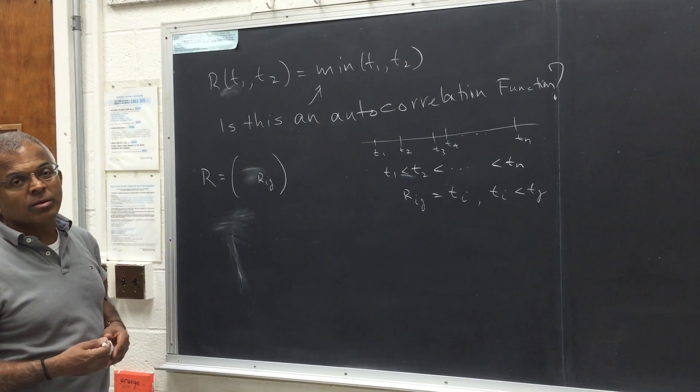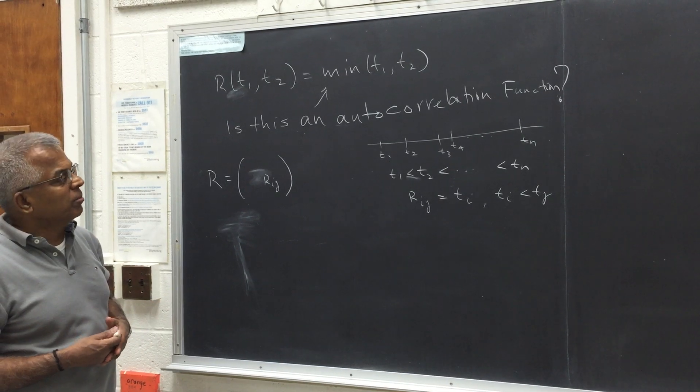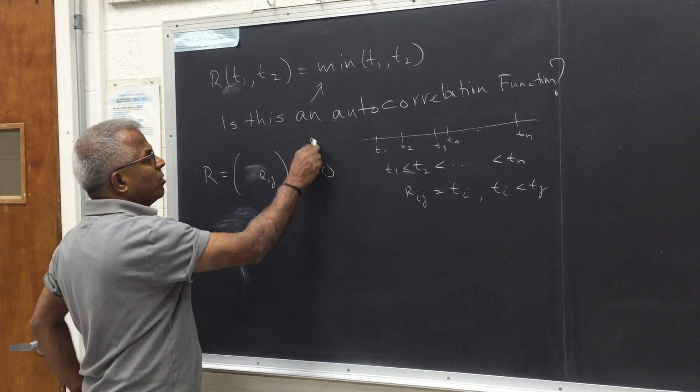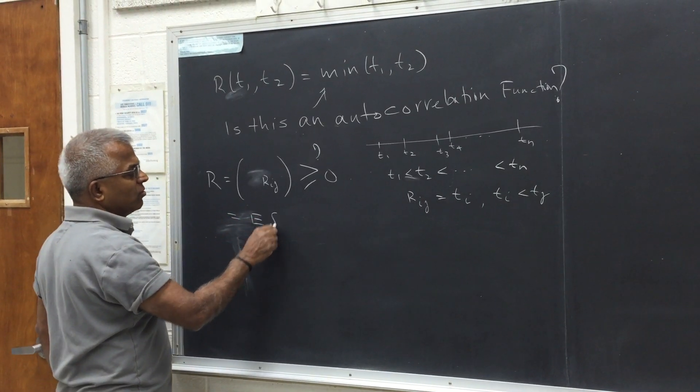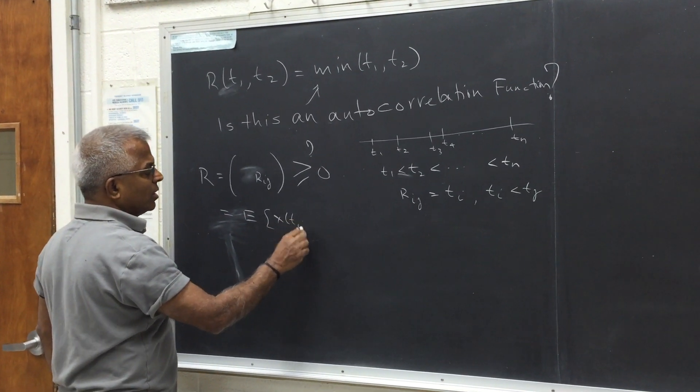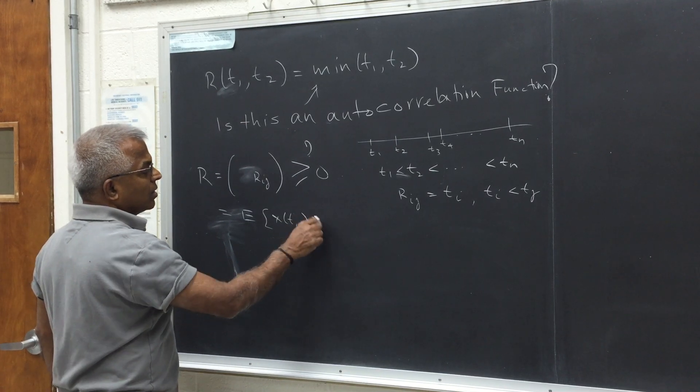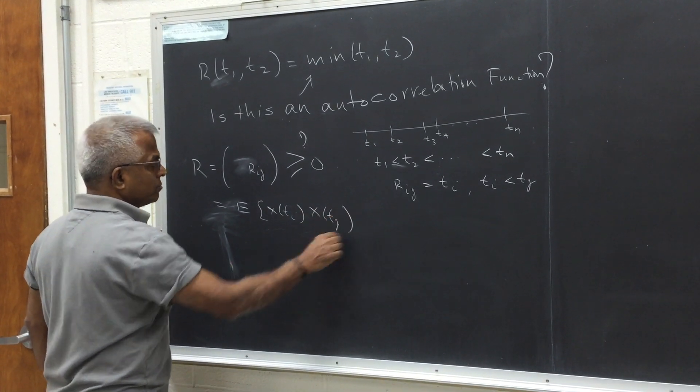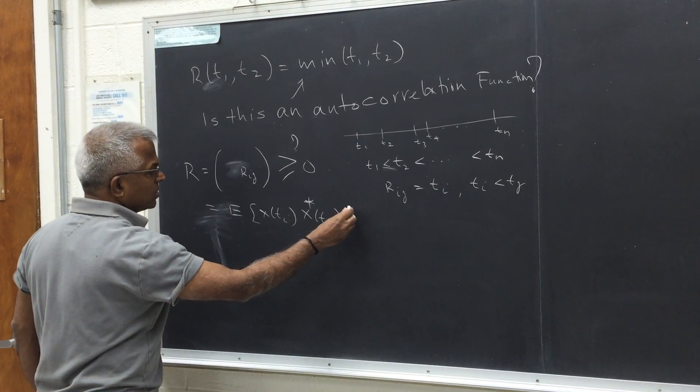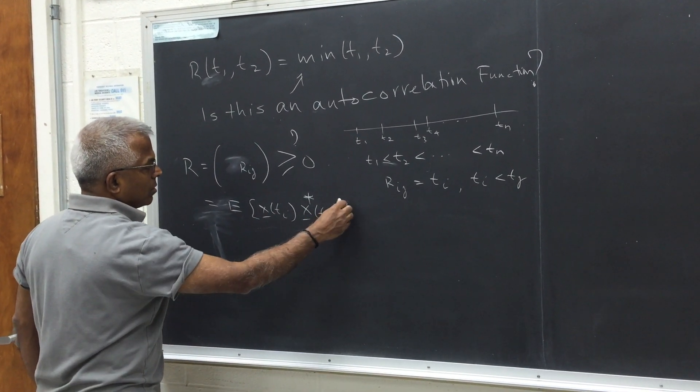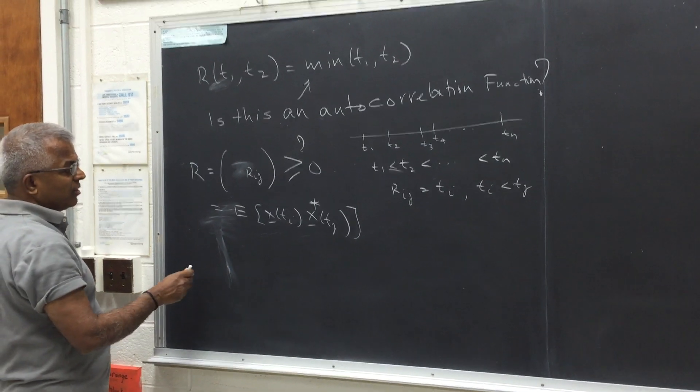So we can give a simple mathematical proof. Remember, any autocorrelation function needs to be non-negative definite. That's because this is expected value of x of ti, x of tj. Let's say in the complex case it is like this.